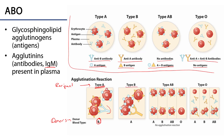If you give someone who is type AB any of the blood types, there is no agglutination, because type AB already has both A and B antigens and has no antibodies to cause agglutination. That's why we refer to type AB blood as the universal recipient — they can receive blood from anyone.